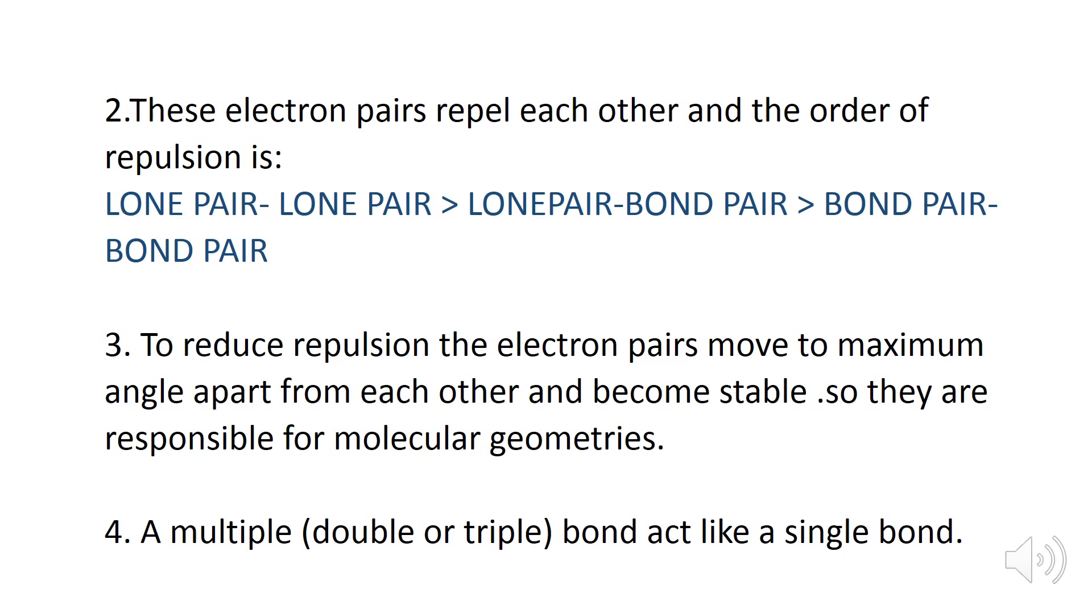It means that in the formation of molecular geometries we can't consider double bond or triple bond, means we are not considering the pi bonds. Only sigma bond or single covalent bonds and the lone pair of electrons will be responsible for molecular geometries formation.